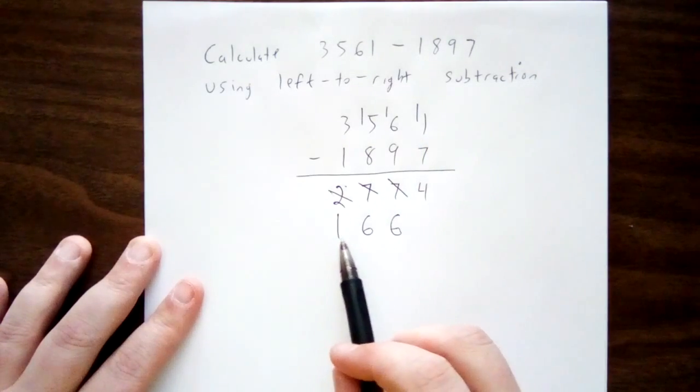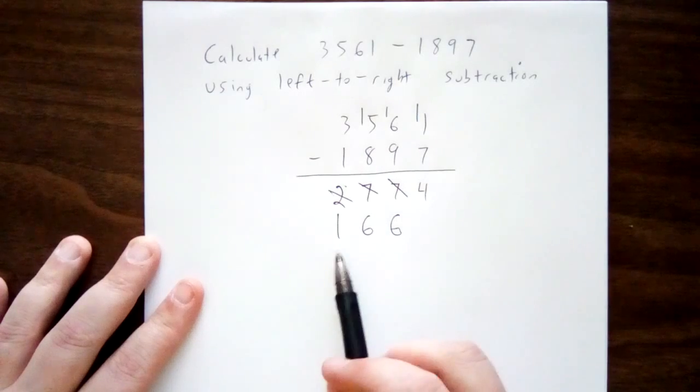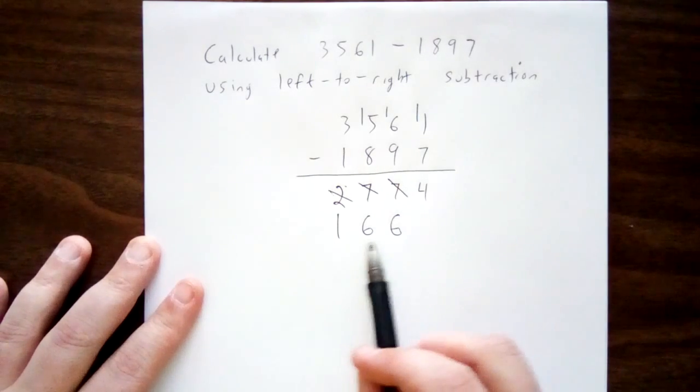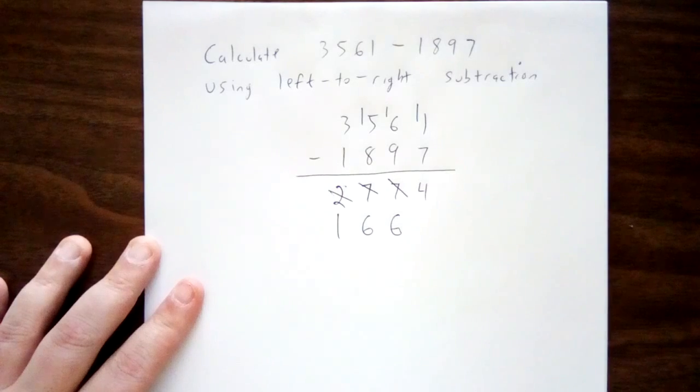For this algorithm, the answer will be the uncrossed-off digits. So we would interpret our answer for this algorithm as 1,664.